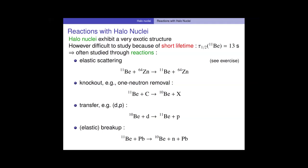Finally, you have the elastic breakup — that's what we are going to discuss in class this afternoon. You send Beryllium-11 on a target, here a lead target. It breaks up into its core and the neutron. You measure both — it's an exclusive measurement — and you try to get information about the structure of the incoming nucleus from that cross-section.